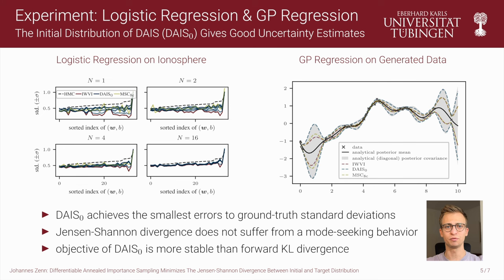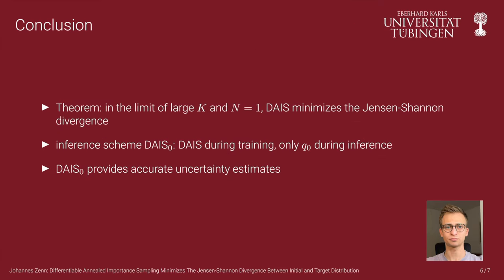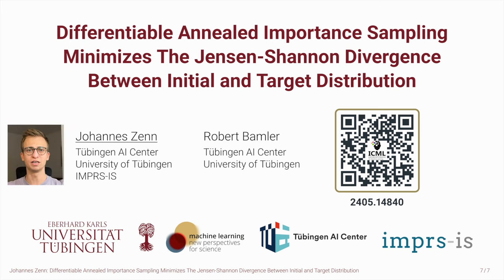Please check out the paper for the quantitative results. To summarize, the paper shows that DICE minimizes the Jensen-Shannon divergence between its initial distribution and target distribution, and motivated by this finding we investigate the initial distribution as a variational distribution by dropping the MCMC steps during inference. We find that the initial distribution provides accurate uncertainty estimates, which we attribute to the Jensen-Shannon divergence that is implicitly minimized. Thank you very much for your attention.